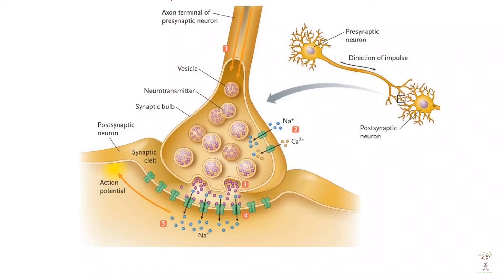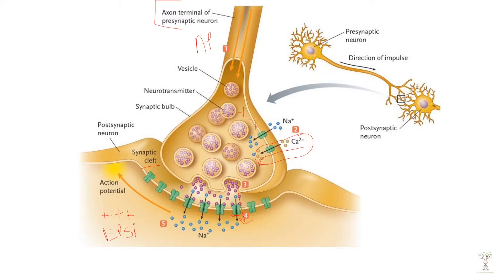In the axon terminal, an action potential comes down and changes the charge of the cell. When we depolarize the membrane, we move positive charges in, and that charge change triggers voltage-gated calcium channels — calcium moves in and neurotransmitters move out. When these neurotransmitters are released, they bind to specific receptors on the target cell. If the target cell becomes more positively charged inside, that is an EPSP; if more negatively charged, that is an IPSP. The type of neurotransmitter, the type of receptor, and the target cell all determine the effect.